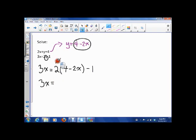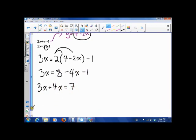So now I have to expand. 2 times 4 is 8, 2 times 2 is 4x minus 1. So now I'm going to take this 4x over to that side, so I'll end up with 3x plus 4x, and I'm going to have 8 minus 1, so that's 7. So I have 7x is equal to 7, so x is equal to 1.